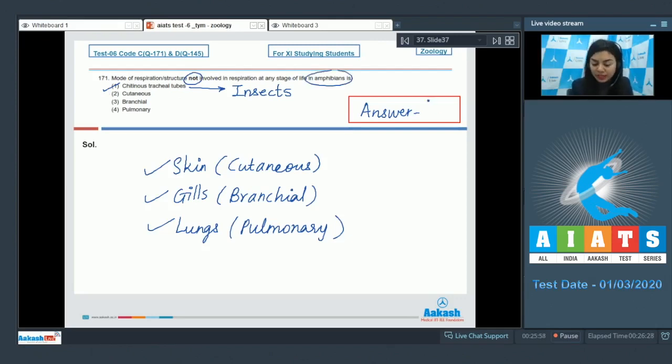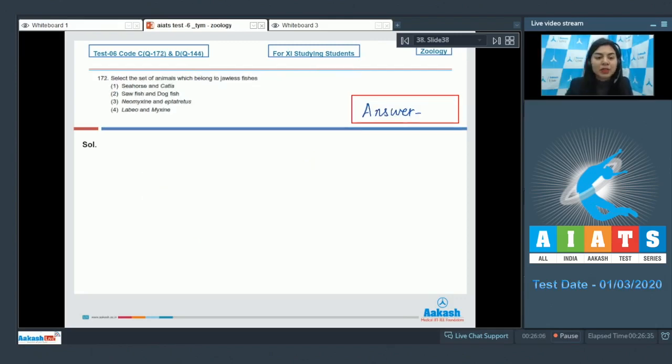Question 172: Select the set of animals which belong to jawless fishes. Cyclostomes are jawless fishes. They have a sectorial mouth and do not possess a jaw, thus they are called jawless fishes.